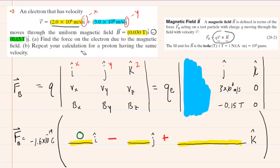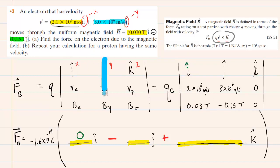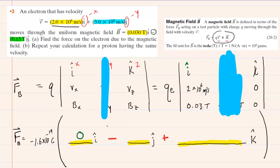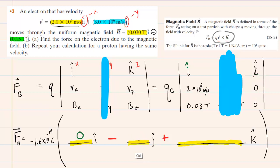For j hat, cover up that column of the cross product. What's left is the i hat and k hat columns. Multiply diagonally: 2×10⁶ times 0 is 0, and 0.03 times 0 is also 0. Subtract those two results: 0 minus 0 is 0. So the j hat component also becomes 0.